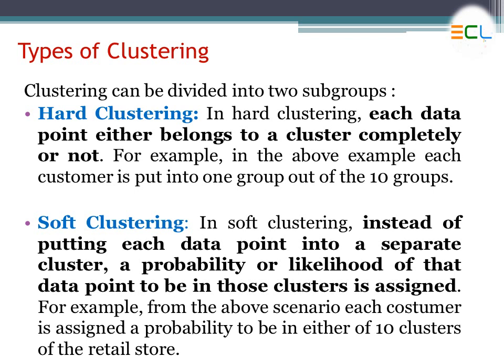Now let's talk about the different types of clustering. Clustering can be divided into two subgroups: hard clustering and soft clustering. In hard clustering, each data point either belongs to a cluster completely or not. For example, in the rental store example, each customer is put into one group out of the ten groups completely.